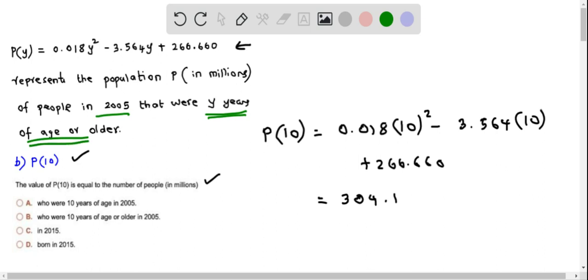So therefore p of 10 represents the population of people in 2005 that were 10 years or older. And the best choice of this is who were 10 years of age or older. So this is the correct answer for this question.